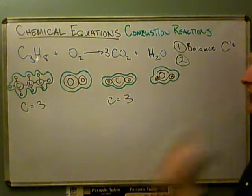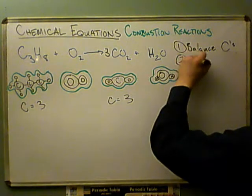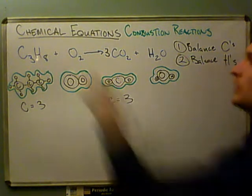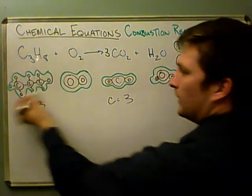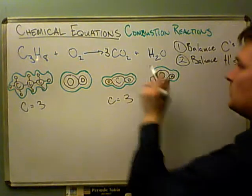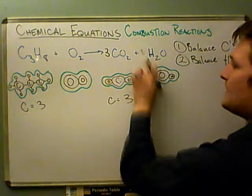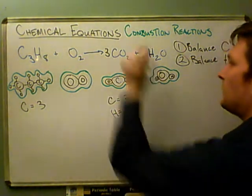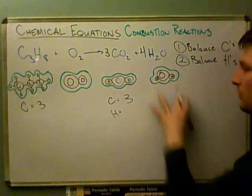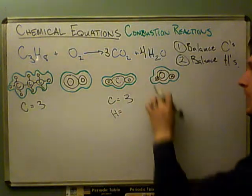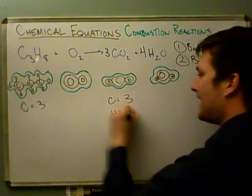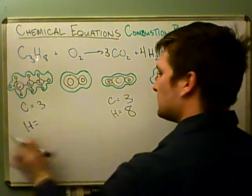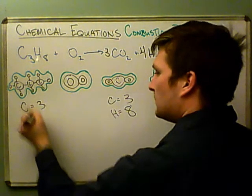Once the carbons are balanced, we go to step number two: balance the hydrogens. On the left side, propane has eight hydrogens total. On the right side, H2O only has two. So what do I multiply H2O by to get eight? If I multiply by four, that gives me four molecules of H2O, each with two hydrogens — a total of eight. So now we're balanced in both carbons and hydrogens.